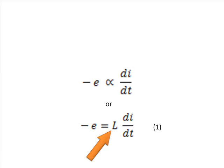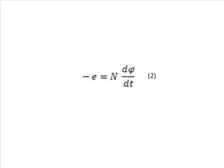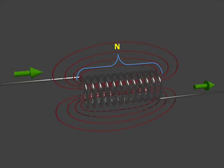However, the induced EMF is basically due to the rate of change of flux linkages. Thus, the EMF may also be calculated by Faraday's law of electromagnetic induction as follows: minus E equals N into dφ/dt, say this is equation 2. Where N is the number of turns in the coil and dφ/dt is the rate of change of flux linkage with respect to time with one turn.